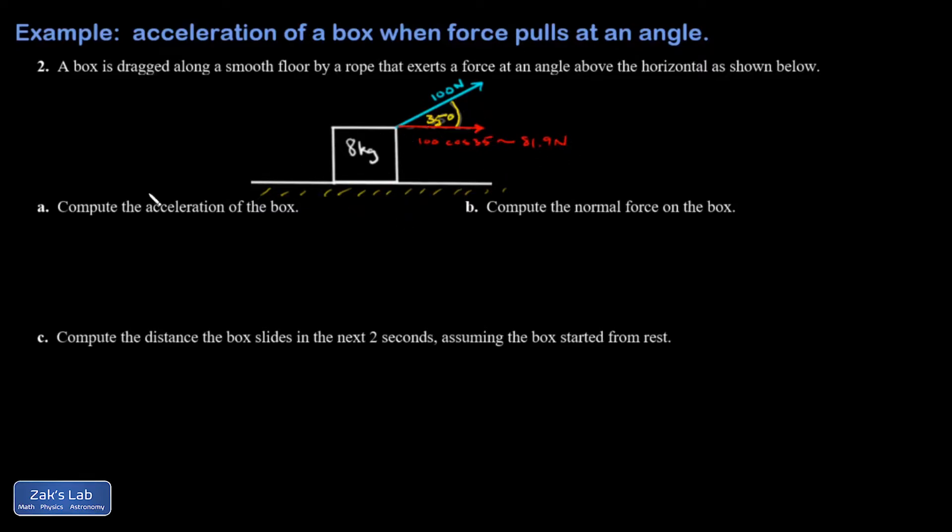That's all that matters for answering part A, but I'll go ahead and do the other component right now. There's a vertical piece, and that's going to be 100 sine 35 degrees. So 100 sine 35 is approximately 57.4 newtons.